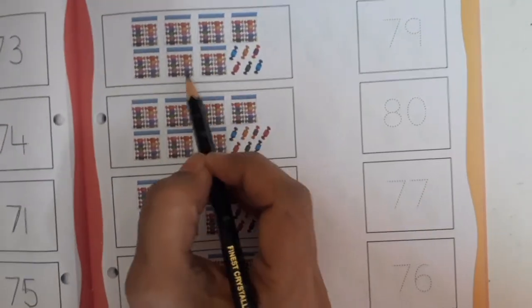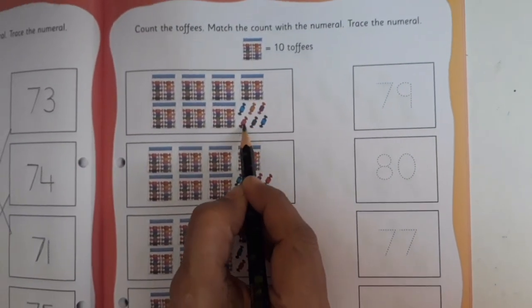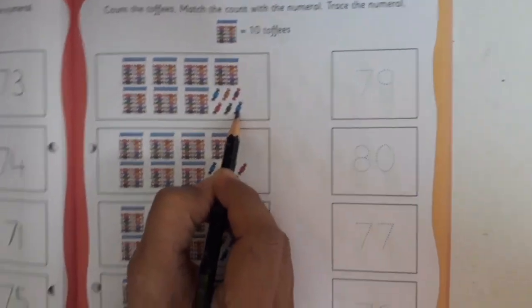Now here let's count: 70, 71, 72, 73, 74, 75, and 76. So we are going to match it with 76.